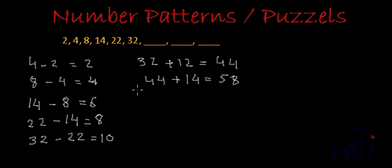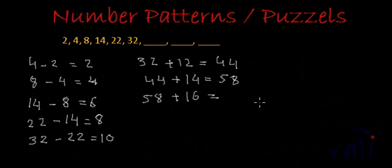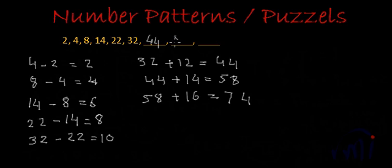And the term after 58 will be 58 plus 16, because 16 is the next even number after 14. So 8 plus 6 is 14, carry 1 forward, 1 plus 5 is 6, plus 1 is 7 — giving us 74. So the next 3 terms after 32 will be 44, 58, and 74.